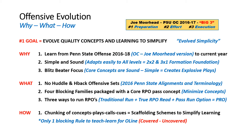We're going to use only four blocking families, and then package that with core RPO pass concepts. If we minimize the concepts, we can help master those techniques. There are three ways to run your RPOs: we can do a traditional run with it, a true RPO read, or what we call a PRO — where we think pass first, run second — a pass-run option. How we're doing this is we simply chunk concepts, plays, calls, and cues all into one, so there's less to process.